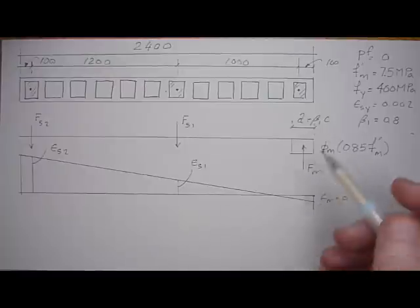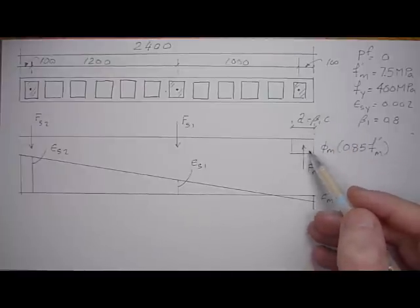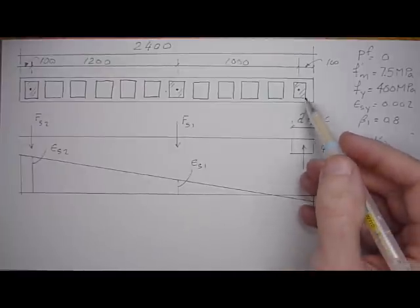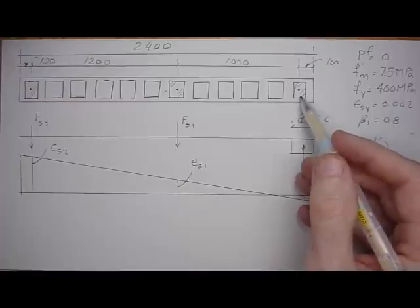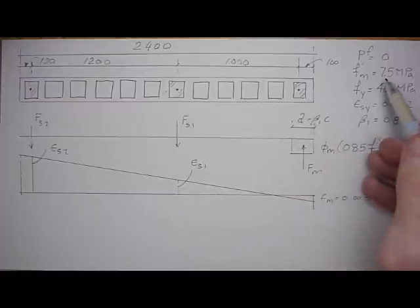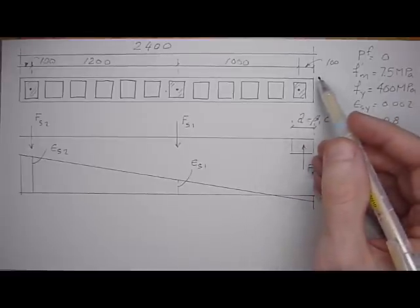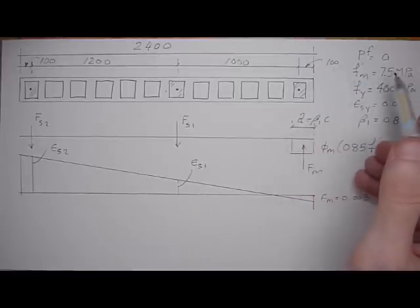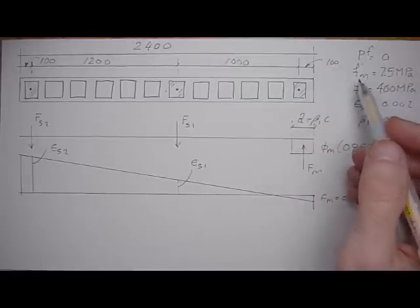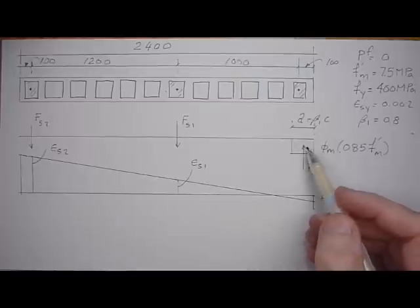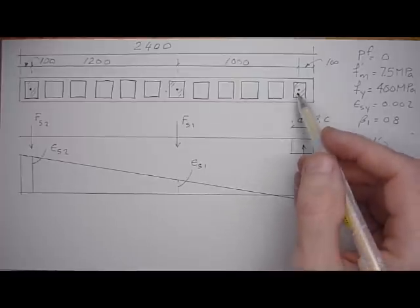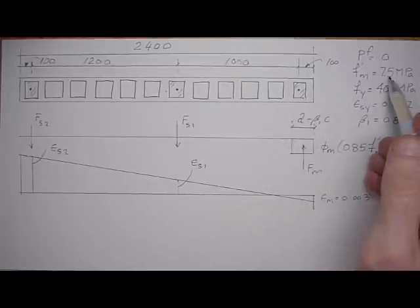One trick to remember is the stress block will definitely be in the grout, in which case you always use solid properties. This is a 15 MPa block, and you have hollow and solid f'm values. Because the stress block factor is in the grout, we use the solid properties: f'm = 7.5 MPa.